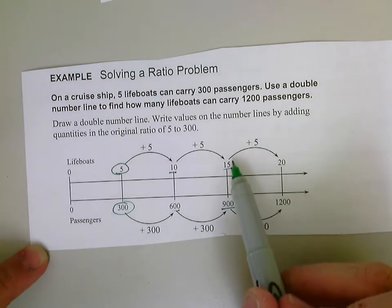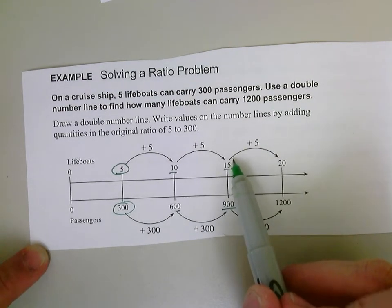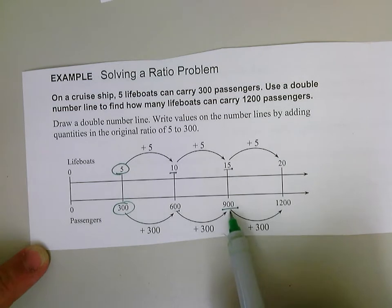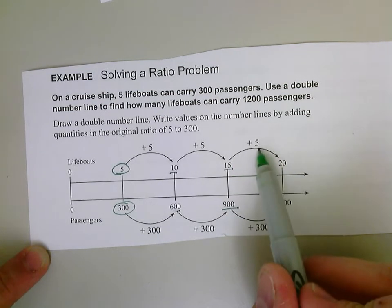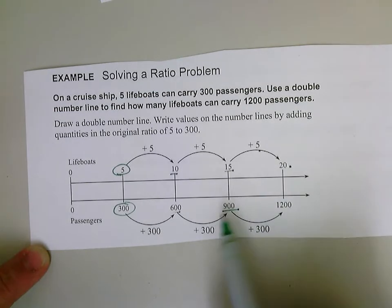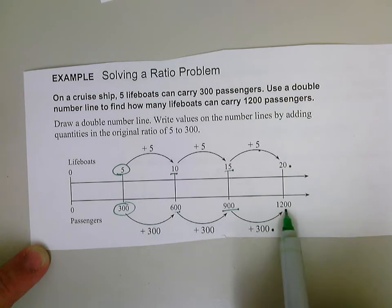And then I'm going to add five again because I didn't get to 1,200. I'm going to do another group of lifeboats, adding five, and I get to 20 lifeboats. And if I add another group of passengers, which is 300, I get to 1,200 passengers.